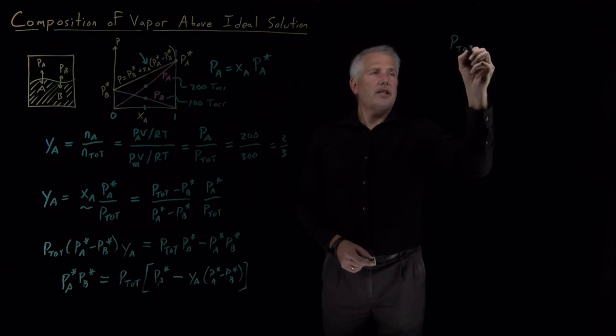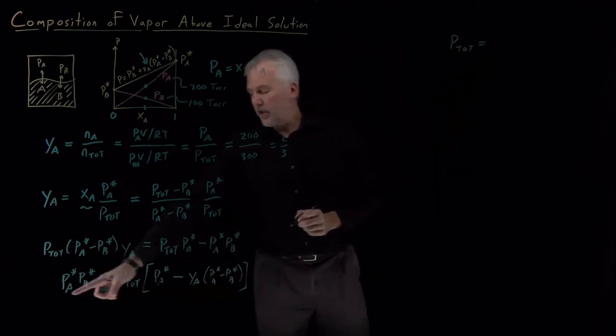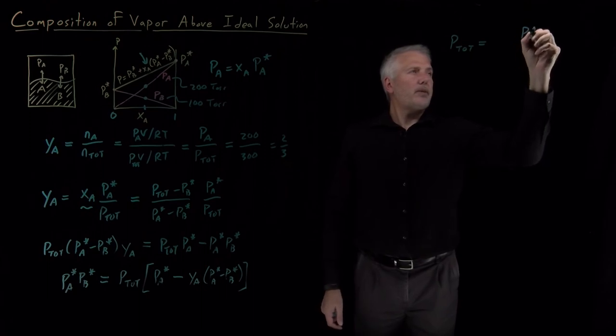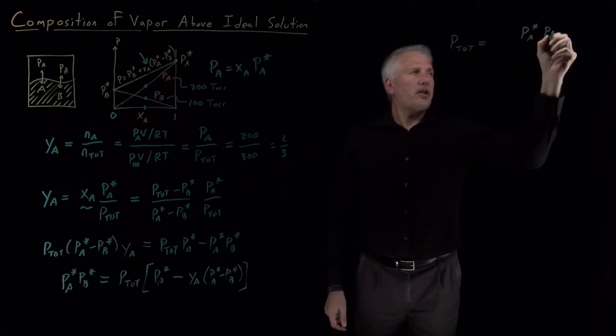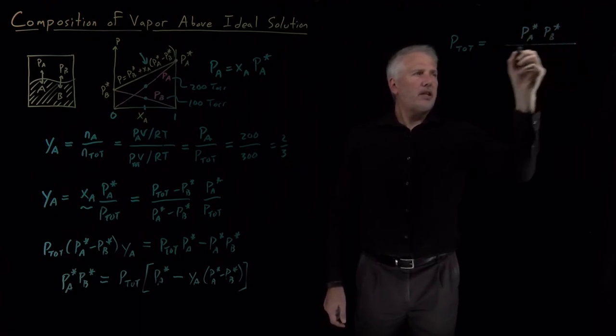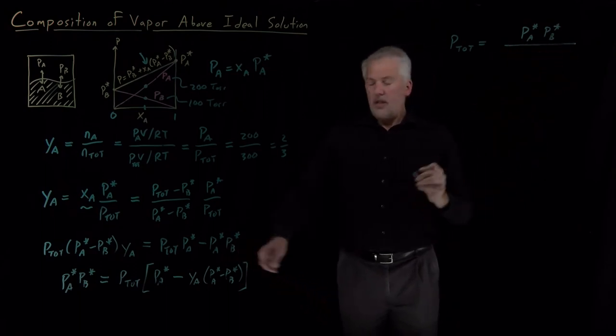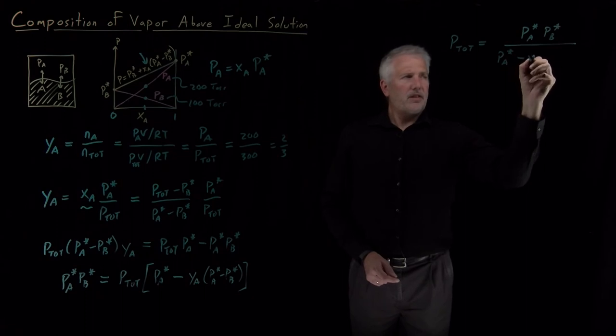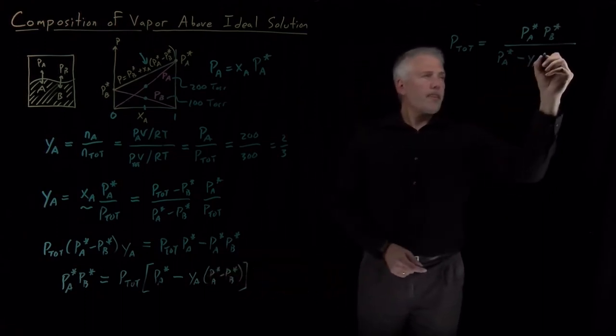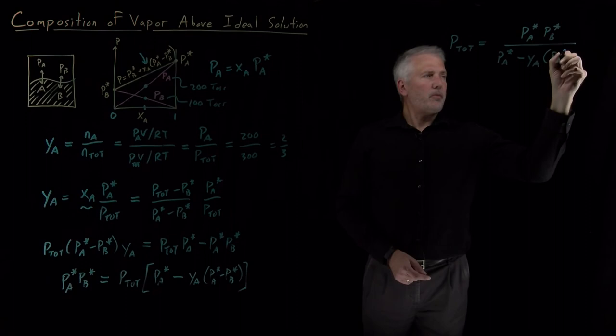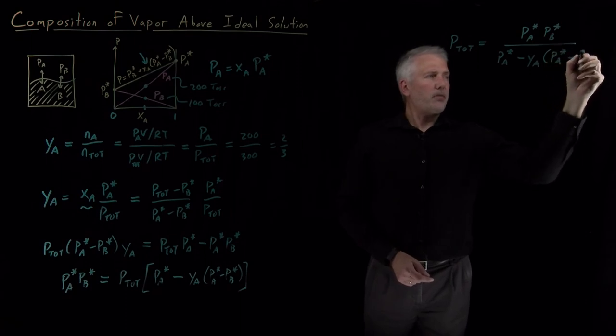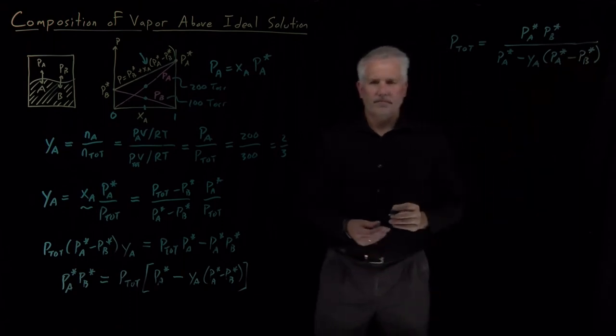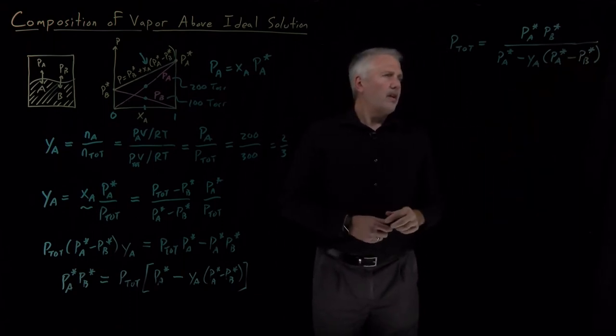And if my goal is to rearrange this and solve for P total, I'll do that over here. I can take the term in brackets, move it over underneath the PA star PB star on the left. And I've got PA star PB star in the numerator, and then in the denominator, PA star minus mole fraction in the vapor phase, and again this difference of the vapor pressures, PA star minus PB star.